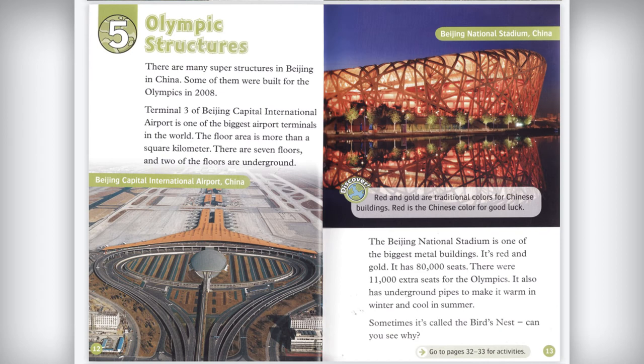The Beijing National Stadium is one of the biggest metal buildings. It's red and gold and has 80,000 seats. There were 11,000 extra seats for the Olympics. It also has underground pipes to make it warm in winter and cool in summer. Sometimes it's called the Bird's Nest. Red and gold are traditional colors for Chinese buildings — red is the Chinese color for luck.